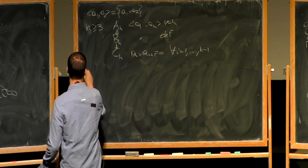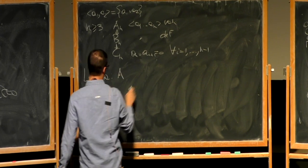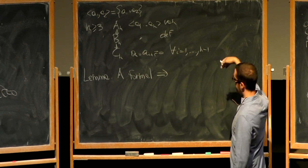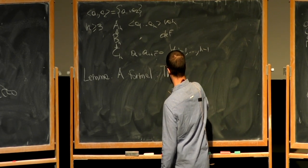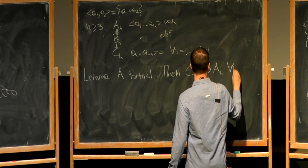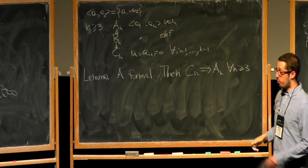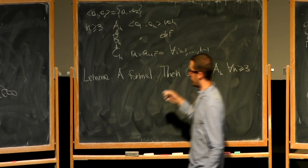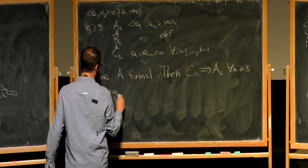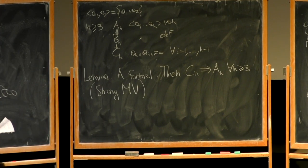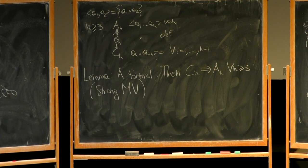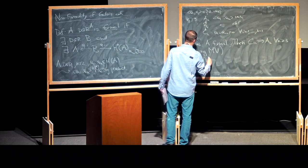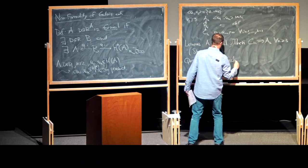What is the relation to formality? Lemma: if a DGA A is formal, then these implications are equivalences — so C_n implies A_n for all n ≥ 3, meaning you can reverse everything. In particular, the Massey vanishing conjecture would hold for A, but it's much stronger: C_n even implies A_n. In fact, this property is called strong Massey vanishing. So formality implies strong Massey vanishing.